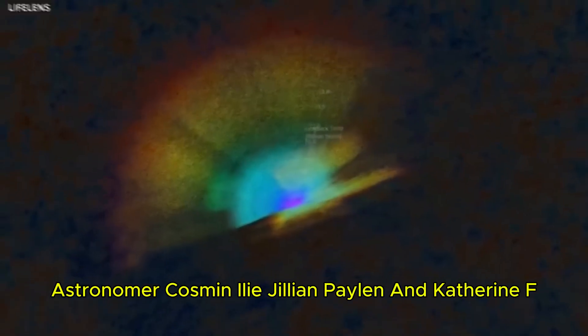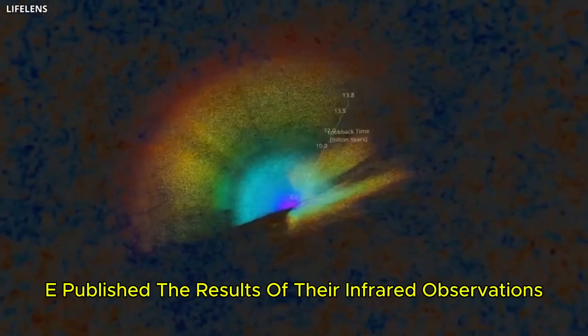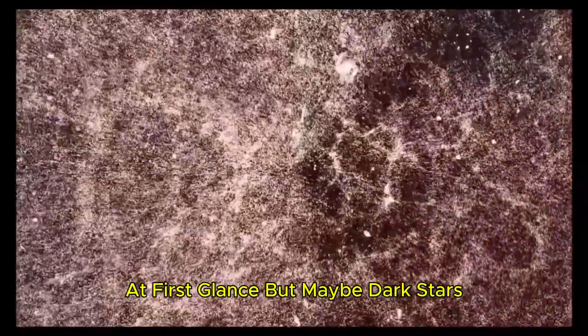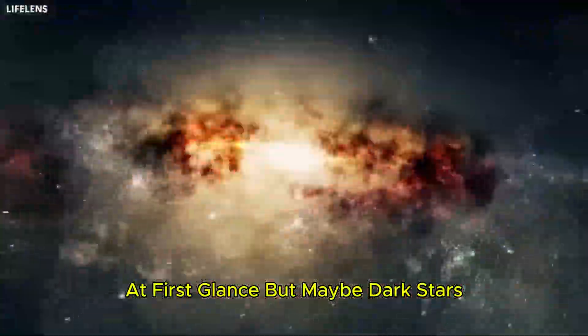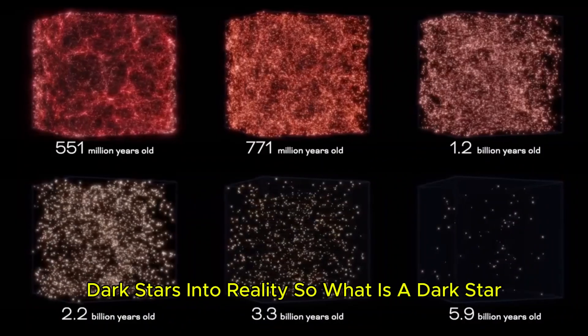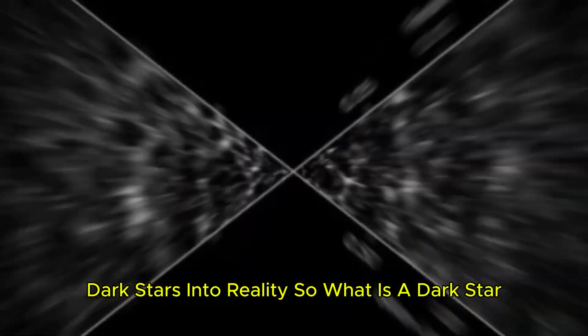Astronomers Cosmon Ely, Gillian Palin, and Catherine F.E. published the results of their infrared observations of the early universe using the James Webb Space Telescope, where they revealed that they uncovered three objects that could be mistaken for galaxies at first glance, but may be dark stars. This discovery has brought the existence of mysterious dark stars into reality. So, what is a dark star?